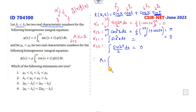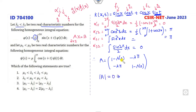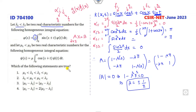So matrix A is: (1 − λ·0), −λ·π in the first row, and −λ·π, (1 − λ·0) in the second row. To find the characteristic values we set the determinant to zero: 1 minus (−λπ)(−λπ) = 0, giving 1 − λ²π² = 0. Therefore λ = ±1/π, so λ_1 = −1/π and λ_2 = +1/π. This is the solution for the first part.